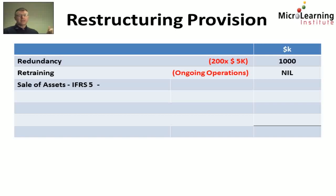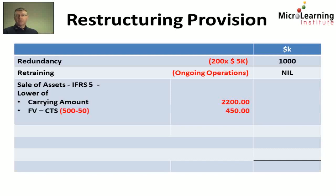Now we have a sale of assets. The assets are going to be held for sale, so they're going to be reclassified to held for sale under IFRS 5. IFRS 5 says that when we reclassify an asset to held for sale, we remeasure it to the lower of two numbers: the carrying amount — we're told the carrying amount is $2.2 million — or the fair value less cost to sell. We're told it is only expected to sell for $500,000, incurring $50,000 of selling cost. So the fair value less cost to sell is only $450,000. So we need to write the asset down from its current carrying amount of $2.2 million to $450,000, meaning we need to recognise an impairment of $1.75 million. And as this impairment relates directly to the restructuring, we can include it in the restructuring provision.